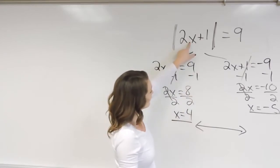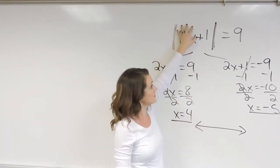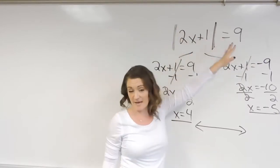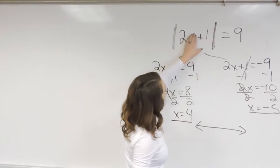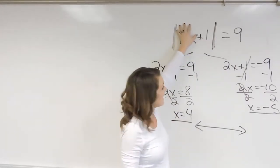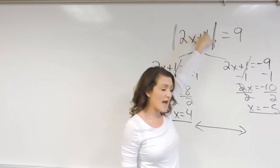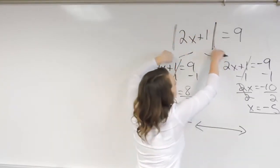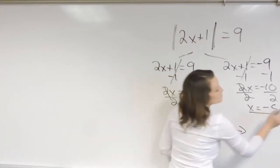So for example, if we plug in 4 for x, that would be 4 times 2, which is 8, and 8 plus 1 is 9. So we're good there. If we plugged in negative 5, negative 5 times 2 is negative 10. Negative 10 plus 1 is negative 9. But if we take the absolute value of negative 9, it equals 9. So both equations do check out.